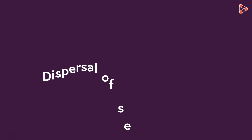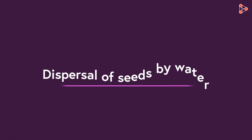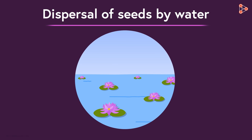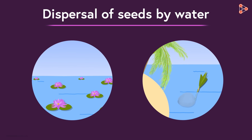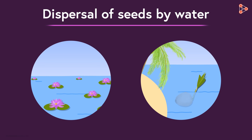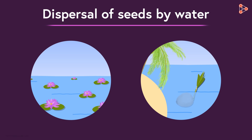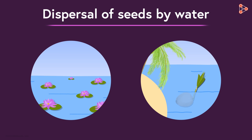The next agent is water. Fruits which float, such as those of the lotus and coconut palm, are carried by water. Coconuts can travel for thousands of kilometers across seas and oceans — hard to believe, but they do.